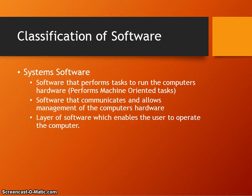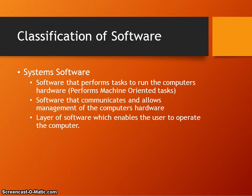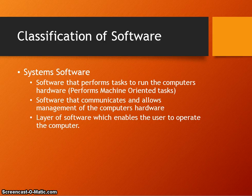The operating system provides an interface between the user and the hardware. It allows all software to run on it, and it is needed in order for the computer's hardware to be used. Utility programs include things like disk copying tools and disk defragmenters — pieces of software that allow interaction with the hardware.